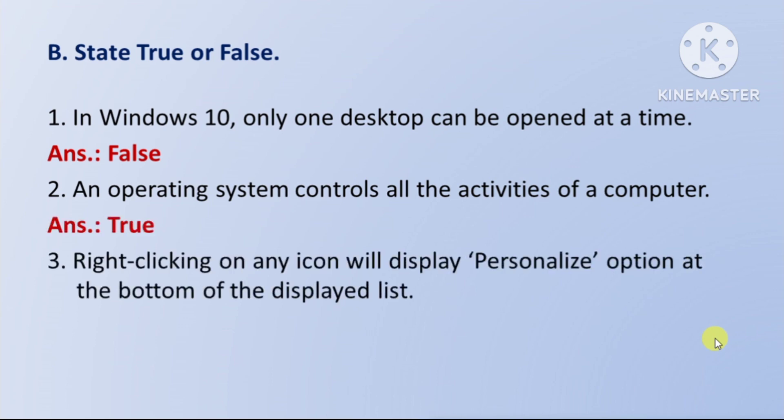Next question: right clicking on any icon will display personalized option at the bottom of the displayed list — when we right click on any icon, the list displays the last option as personalized. So this is false, because the last option is properties.